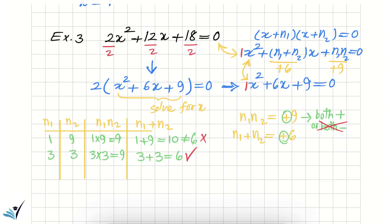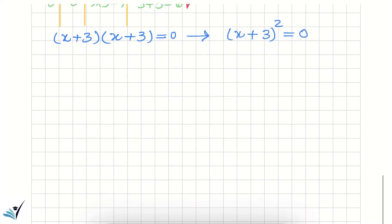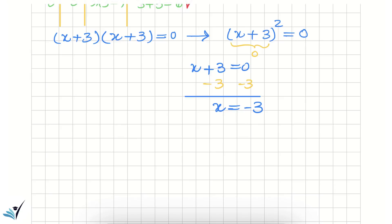Replacing n1 and n2 in the factored form gives open parenthesis x plus 3 close parenthesis times open parenthesis x plus 3 close parenthesis equals zero. Because the two factors are identical, we can write this as open parenthesis x plus 3 close parenthesis squared equals zero. Setting x plus 3 equal to zero and subtracting 3 from both sides gives x equals negative 3. The answer matches what we saw in the graph, and we found only one answer — this is a double root.